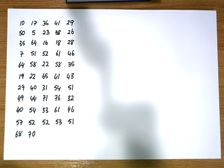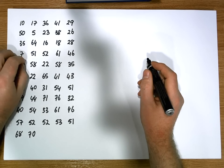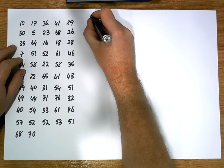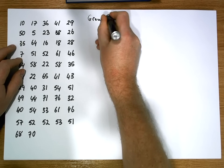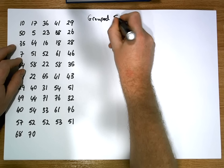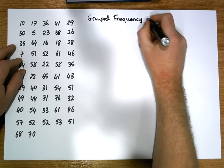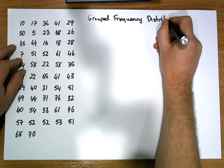Hi guys, this is Jonathan Lambert with the Mathematics Development and Support Service at the National College of Ireland. This short video is going to deal with the construction of a grouped frequency distribution, once you've been given a particular data set.